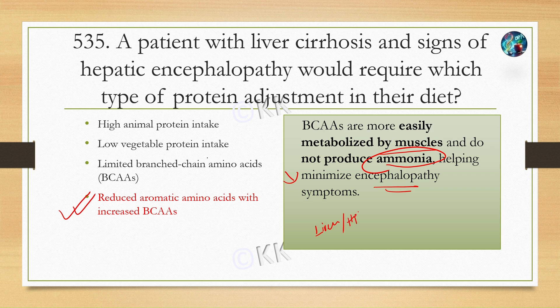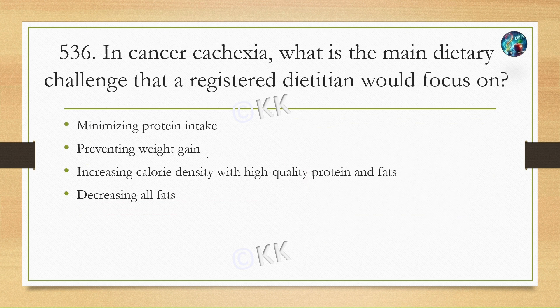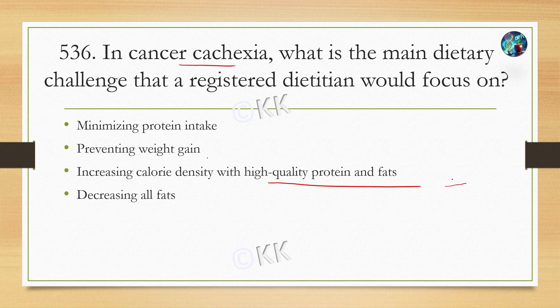In cancer cachexia, what is the main dietary focus that a registered dietitian would address? Option A: minimizing protein intake, Option B: preventing weight gain, Option C: increasing calorie density with high-quality protein and fats, Option D: decreasing all fats. The correct answer is Option C: increasing calorie density with high-quality protein and fats.